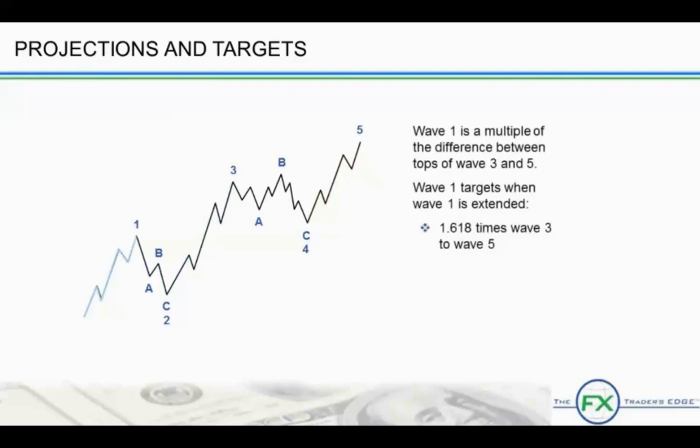When wave 1 is extended, it often measures out to be 1.618 times the length of waves 3 to 5, but this can only be determined after the fact, of course.